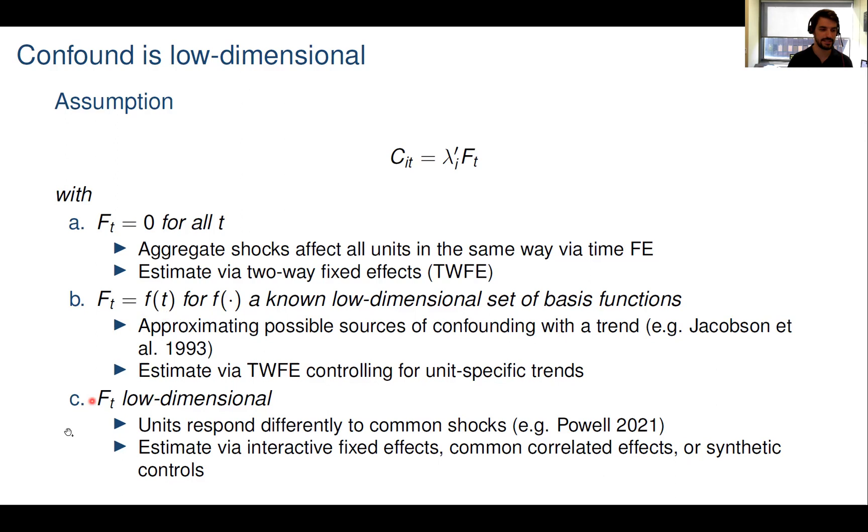Now in case C, we treat the time-varying confound F_t as unknown and don't impose any known functional form. The confound consists of common shocks and units can respond differently to those shocks. One caveat is that this type of setting generally is going to require more data. Under case C, we can estimate our linear panel model via common correlated effects, interactive fixed effects, or synthetic control methods.